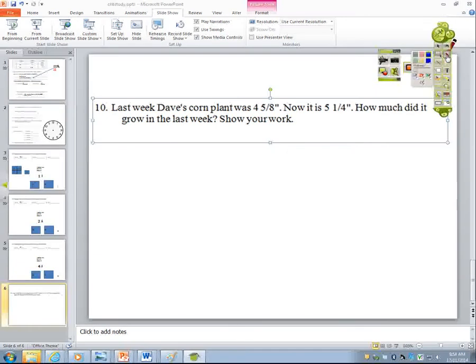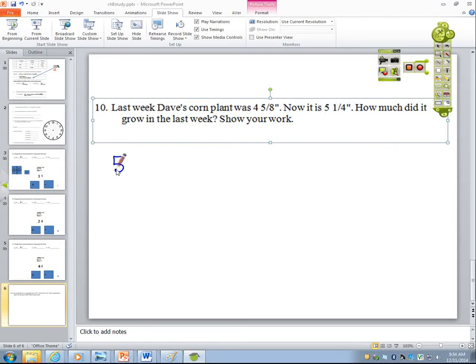So first we would write down the problem way to the left because we have lots of steps. So 5 and 1/4, remember it's going to be like this wide Maddie, so it's going to go way out this way. Perfect. And minus 4 and 5/8.